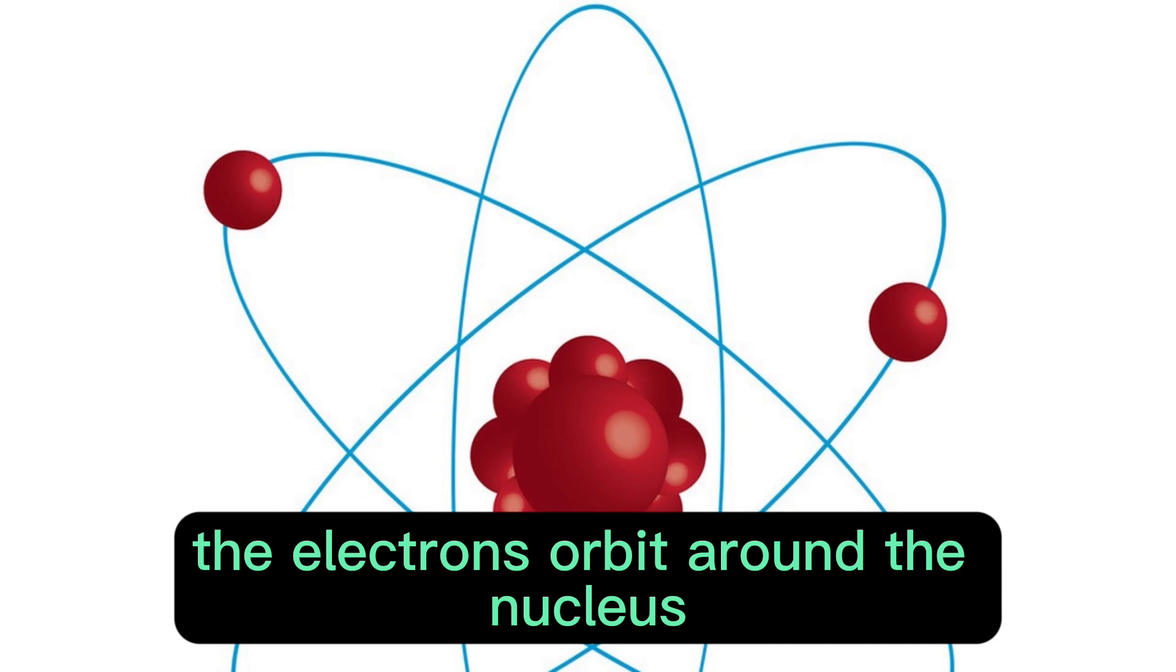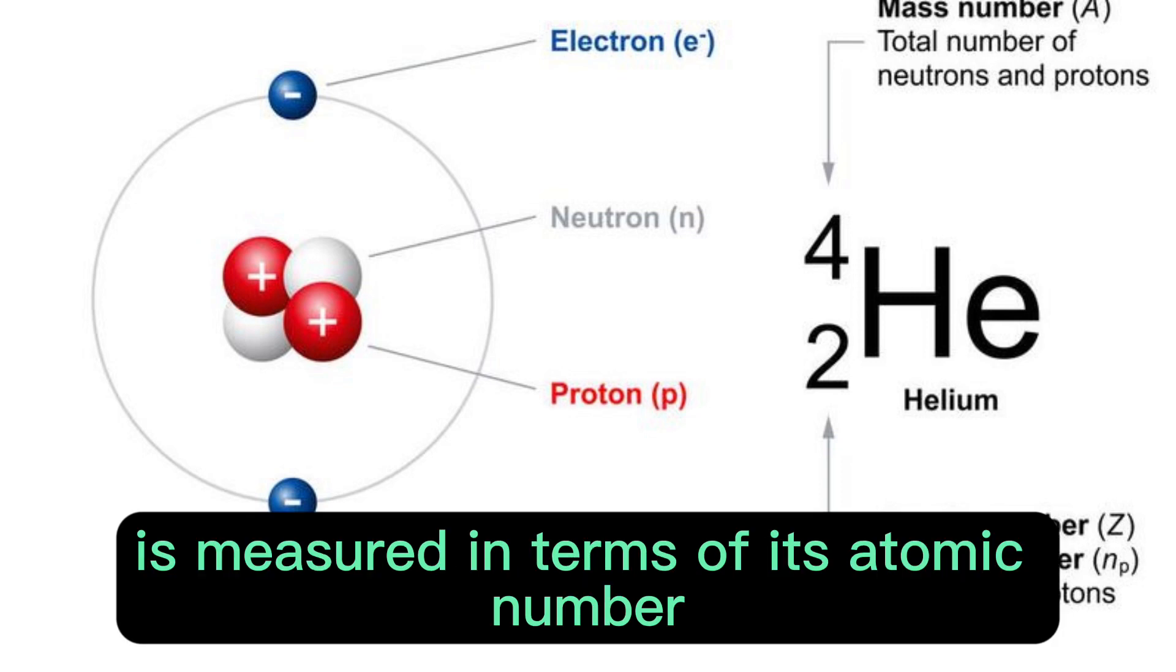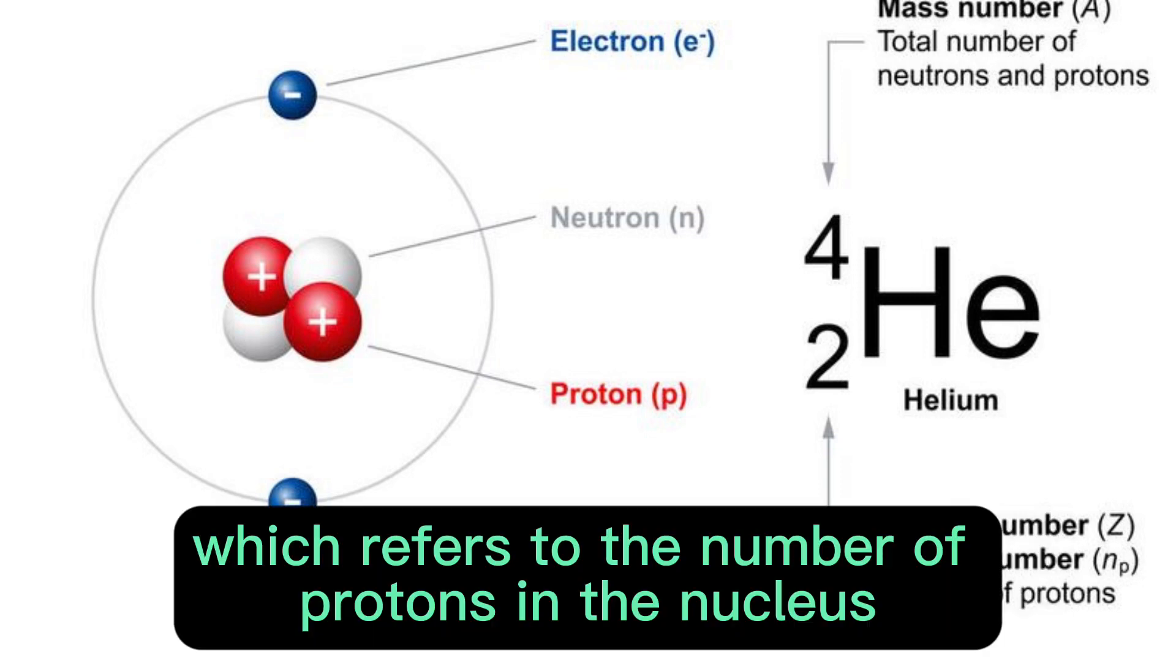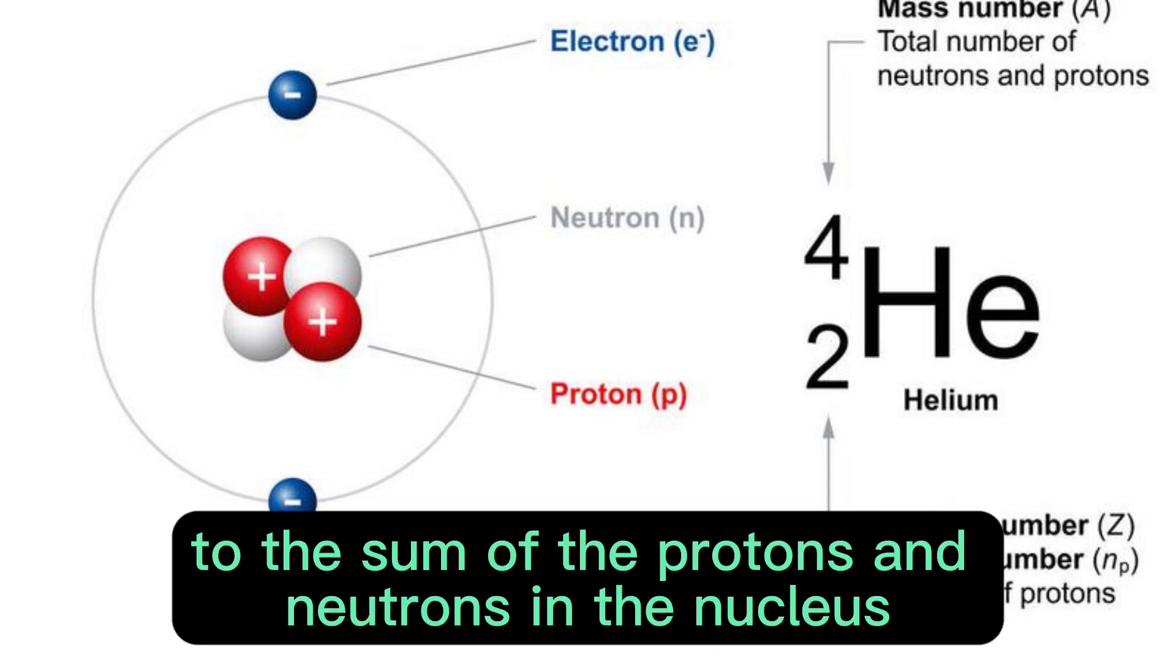The electrons orbit around the nucleus and are attracted to the positive nucleus. The size of an atom is measured in terms of its atomic number, which refers to the number of protons in the nucleus. The mass number of an atom is equal to the sum of the protons and neutrons in the nucleus.